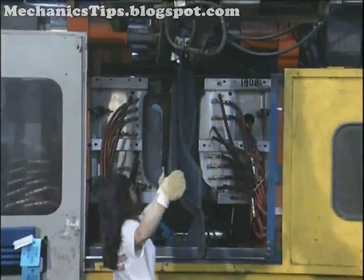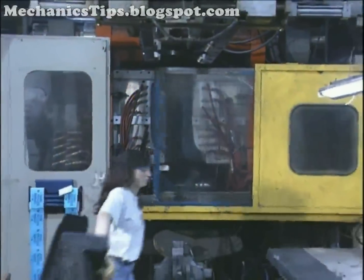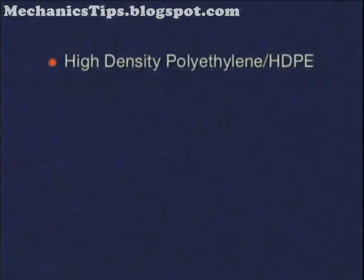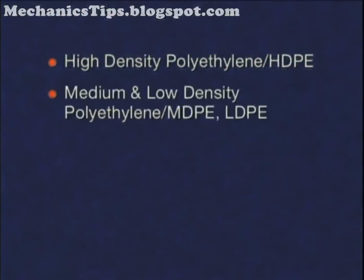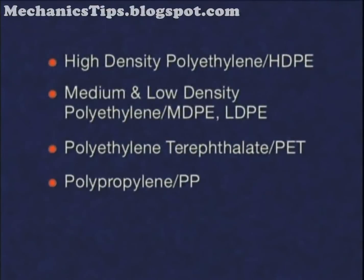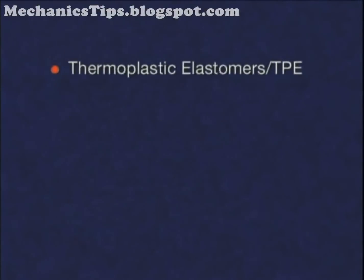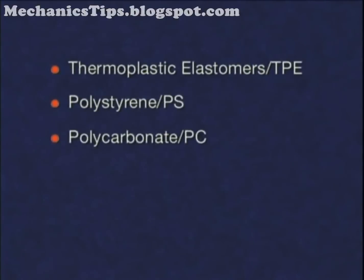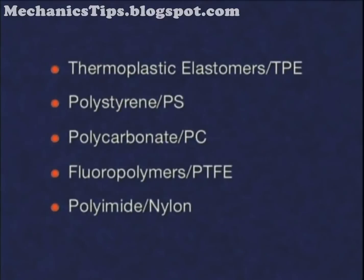Blow molded products are formed from thermoplastic resins such as high-density polyethylene, medium and low-density polyethylene, polyethylene terephthalate, polypropylene, polyvinyl chloride, thermoplastic elastomers, polystyrene, polycarbonate, fluoropolymers, polyimide, and many other materials.